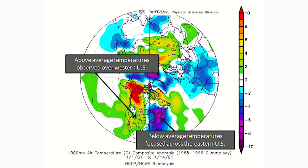First things first, we're going to look at what a positive PNA would look like. I'm going to show you two different graphics from two different sources to show you what to look for when we see this type of pattern. A positive Pacific North American Oscillation means positive temperatures and positive heights in the Pacific North American regions — specifically some positive heights around the west coast of the United States, west coast of Canada, and into Alaska.